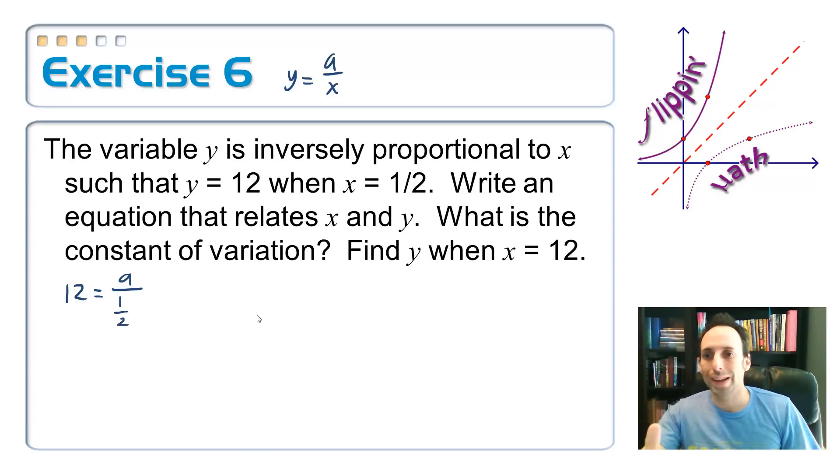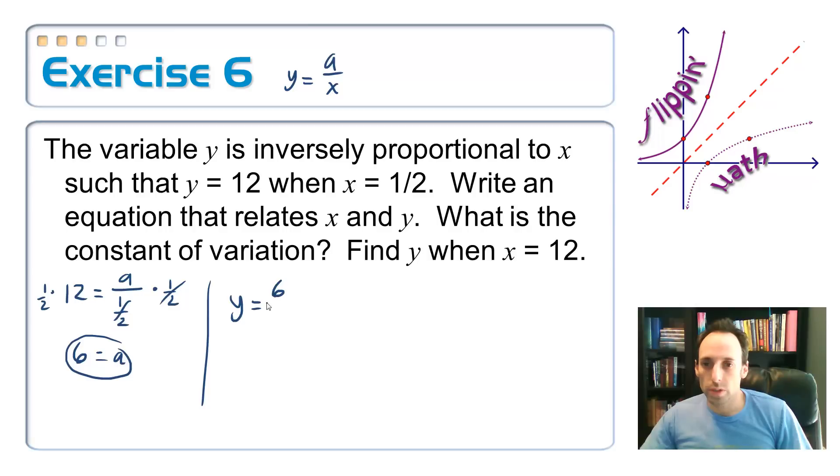Let's write it down. 12 equals a over 1 half. How do I get rid of that 1 half that's on the bottom? I'm going to times both sides by a half. It gets rid of this half, and what's half of 12? 6. So there's our constant of variation. And rewriting our equation, y is equal to 6 over x.